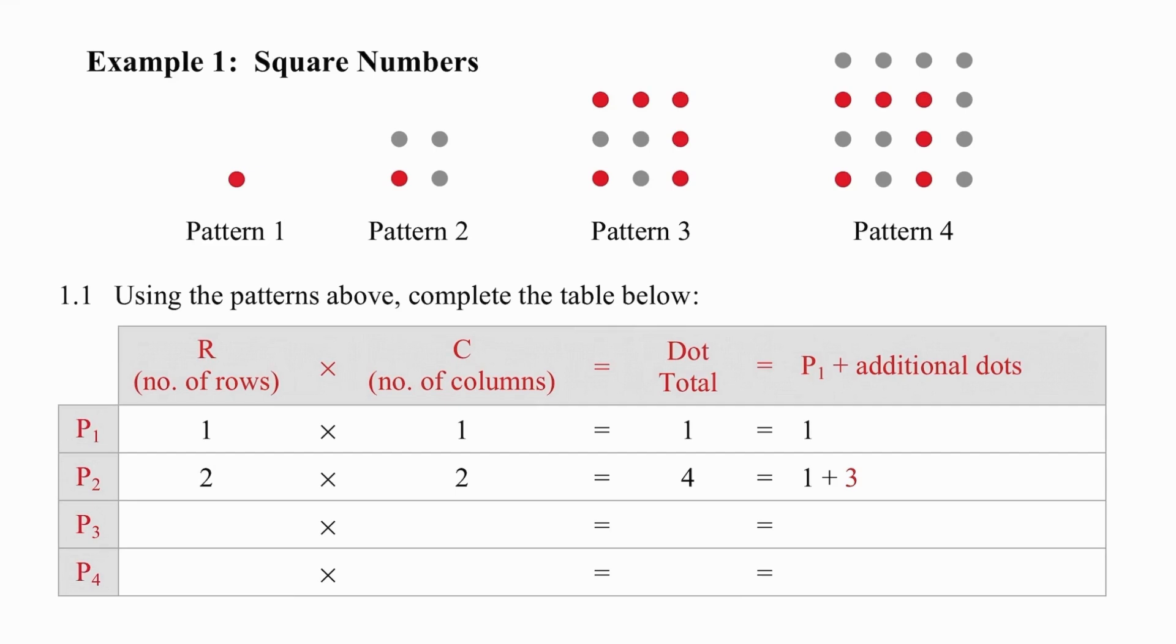We're going to be counting the dots to see where the pattern comes from. If we look at pattern one, we have one dot. If we look at pattern two, we have one dot and we add three. When we get to pattern three, it starts becoming slightly more hectic. Count the rows and then simply record in the table the number of rows that you have.